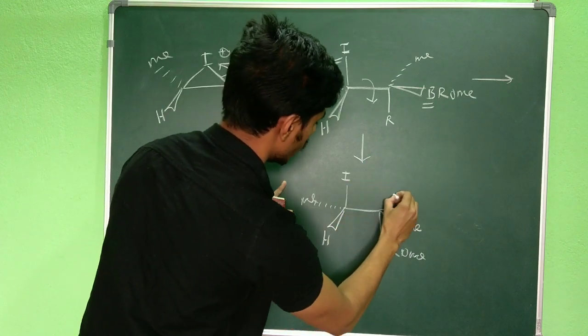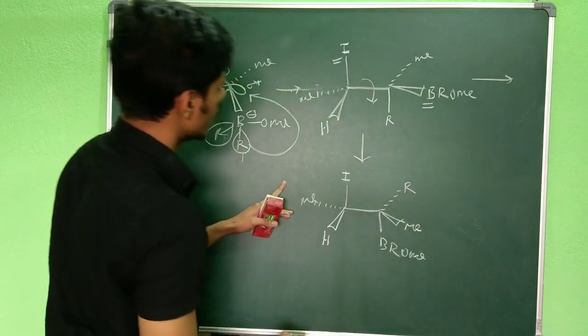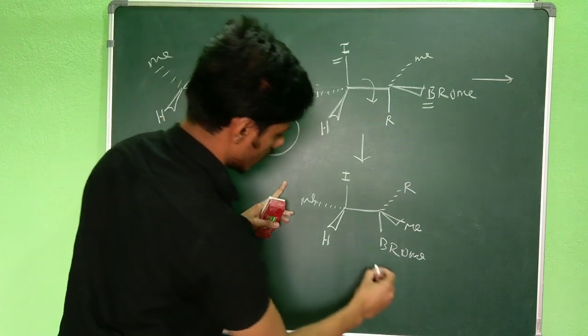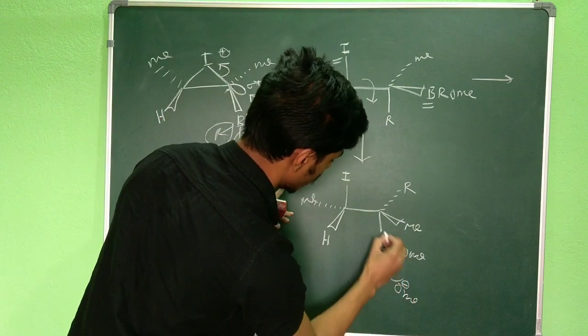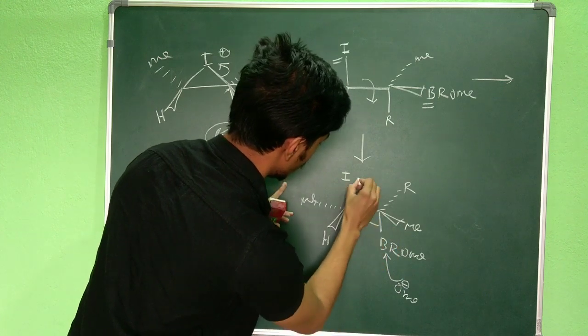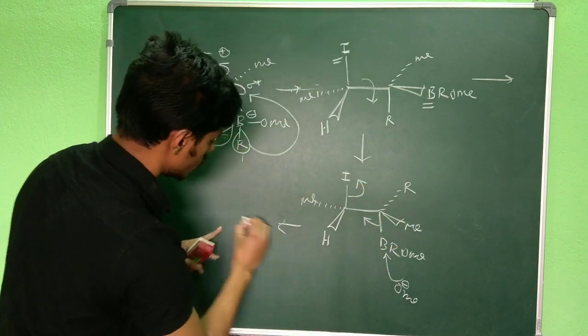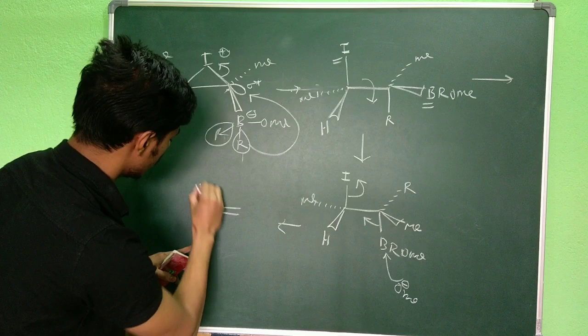If it goes backward and now another OMe will come, so it will add up over here. This one will go here and this will be eliminated. Now another OMe will come. It will add up over here, this will go here and this will be eliminated.